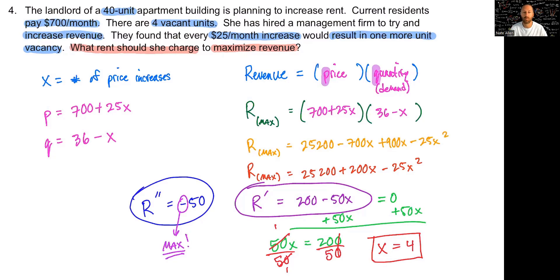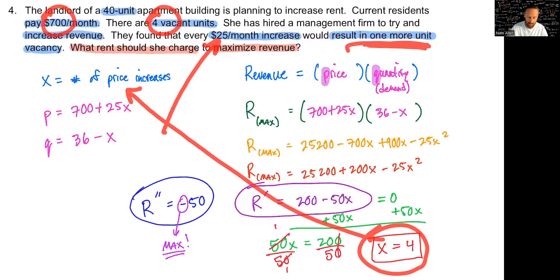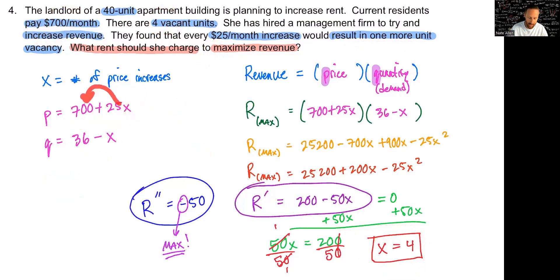All right, so that means overall, what have we found? Well, we should have four price increases of $25 a month, meaning if we raised it to $800 a month, we would lose four more vacancies, which we already had four. So now we would be down to $32, but we would actually be earning $800 a month. If we plug that four in here, you can see that would add 100 and the $800 times the $32 is going to be the maximum. For those less, even four more units down to $32 units, that would give you the most revenue.